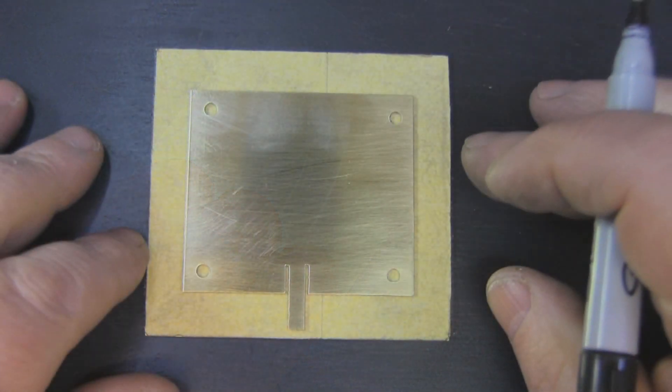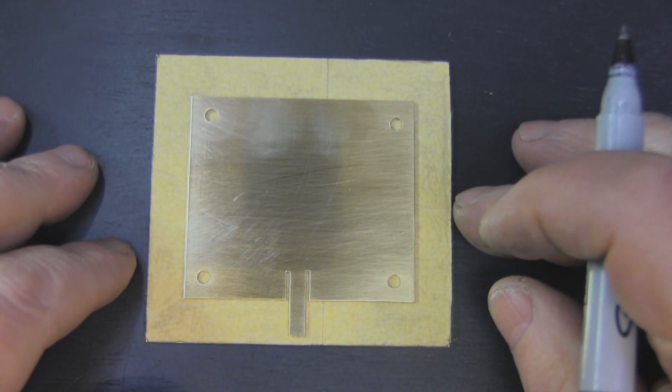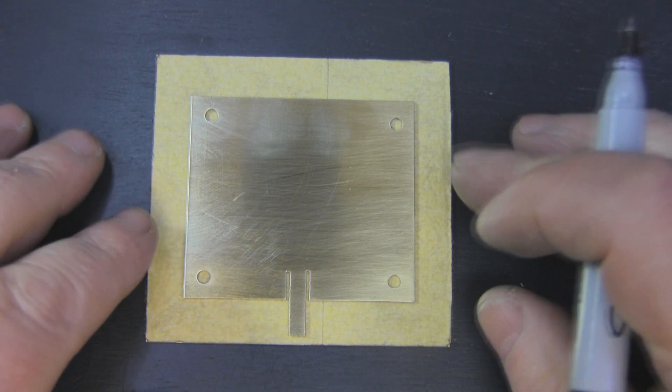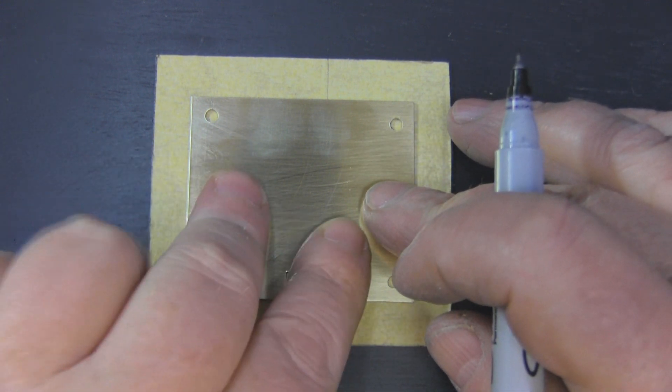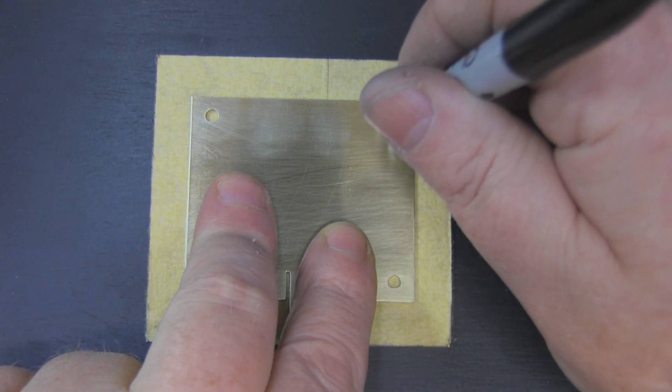Now that I've drilled the holes in the front main driven element of this antenna, I can use those holes as a template to drill holes in the back reflector.